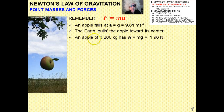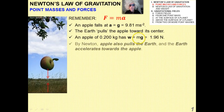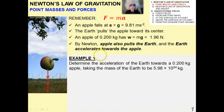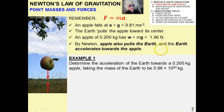A 200-gram apple, for example, has a weight of about 2 Newtons, because that's m times g. By Newton's Third Law, the apple also pulls the Earth up to meet it — the Earth has to accelerate up towards the apple. In Example 1, determine the acceleration of the Earth towards a 200-gram apple, taking the mass of the Earth to be 5.98 times 10 to the 24th kilograms.